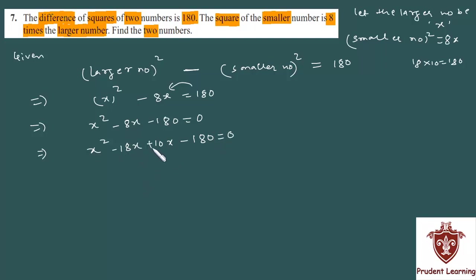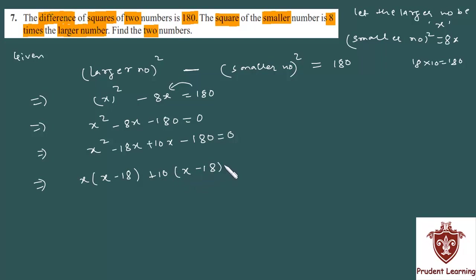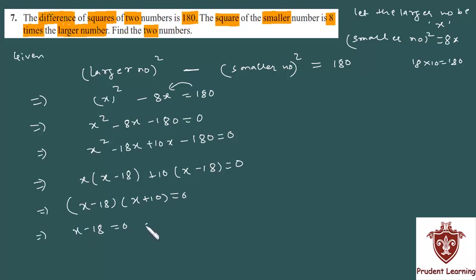Now factorize. In the first two terms, take x as common; in the last two, take 10 as common. You get x(x minus 18) plus 10(x minus 18) equals 0. Then (x minus 18) is common, giving (x minus 18)(x plus 10) equals 0. So either x minus 18 equals 0 or x plus 10 equals 0, which means x equals 18 or x equals minus 10.